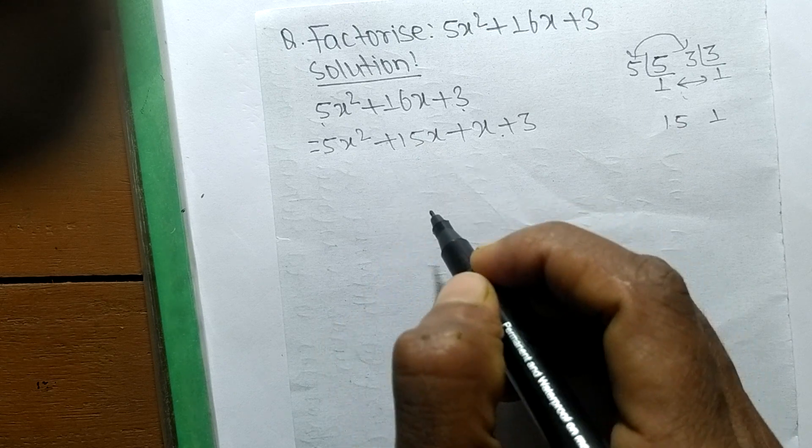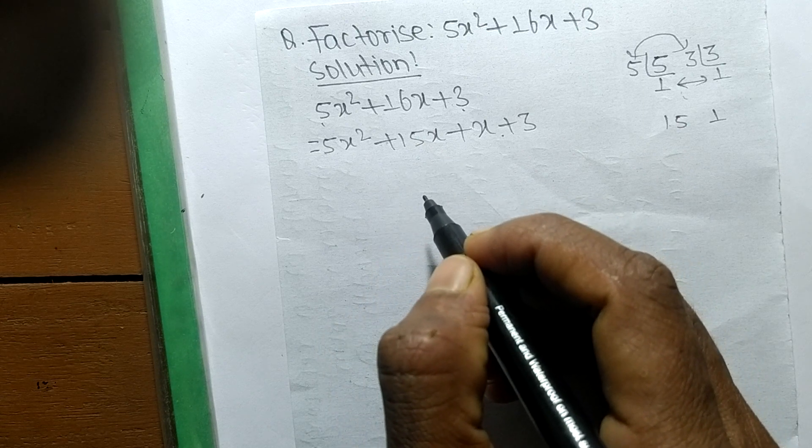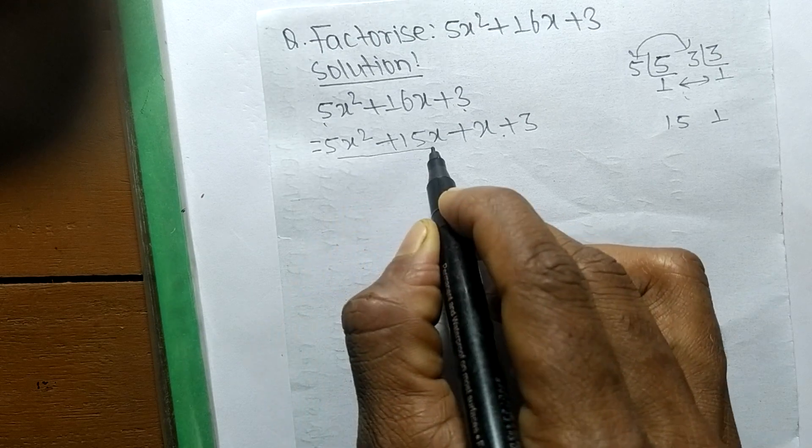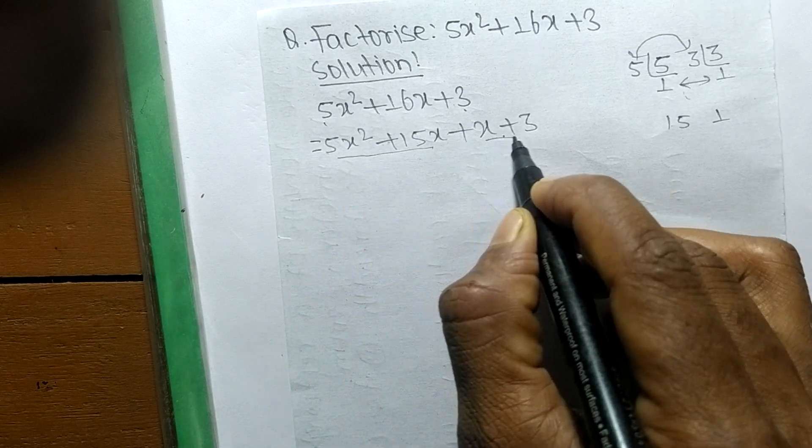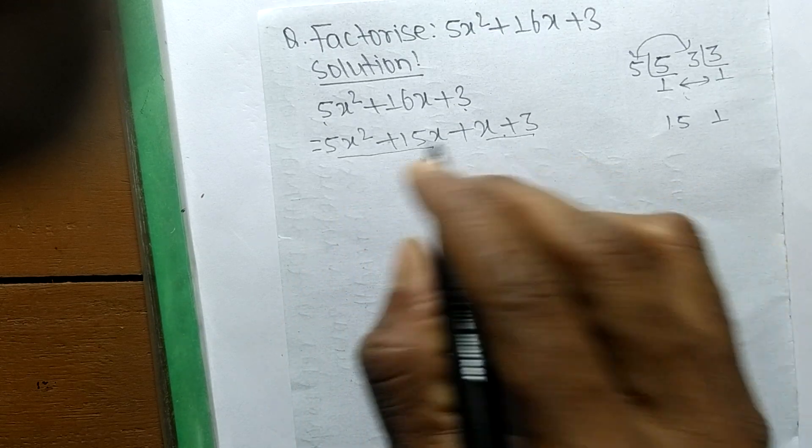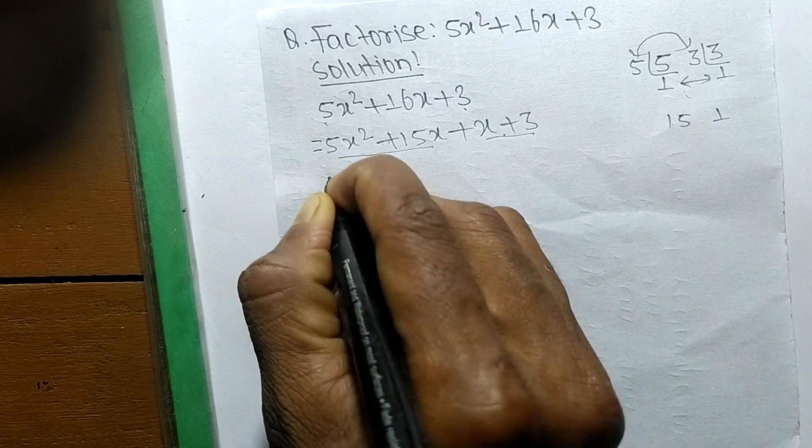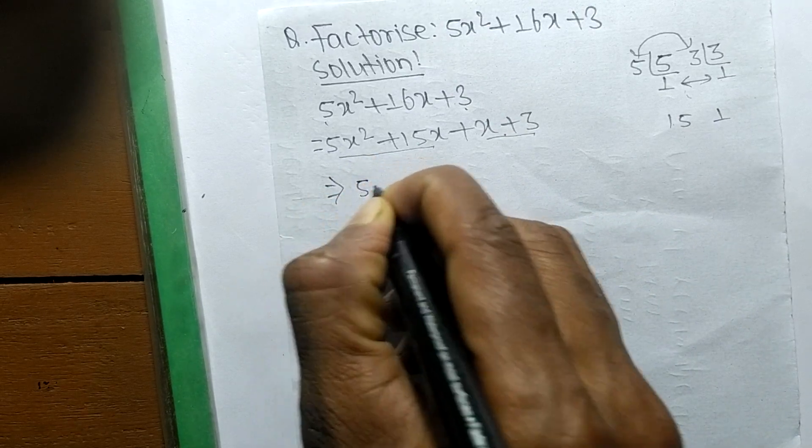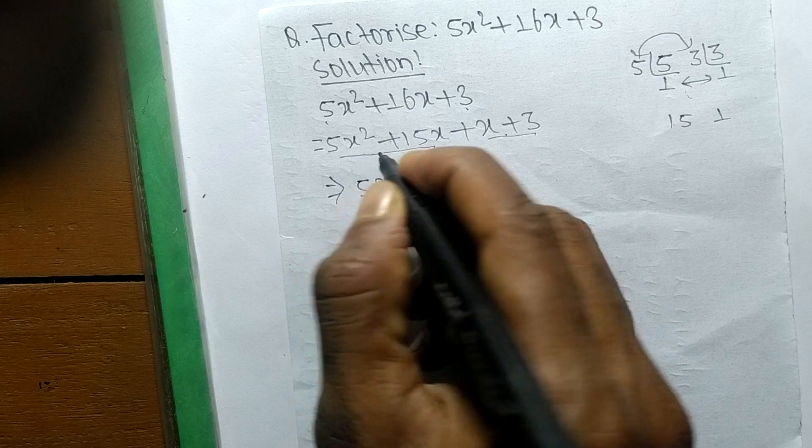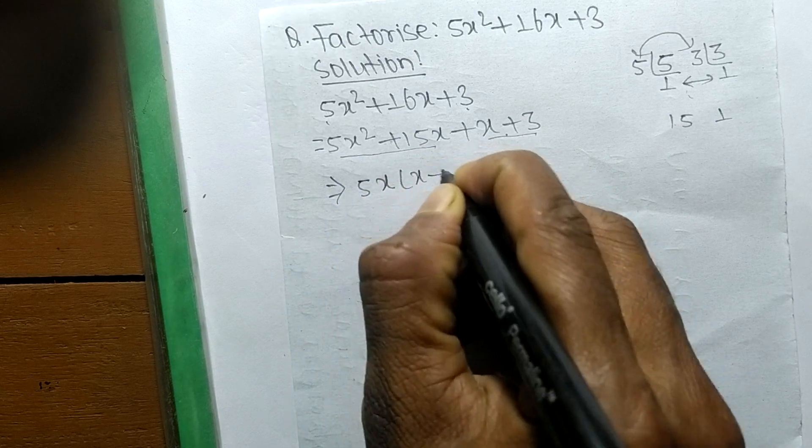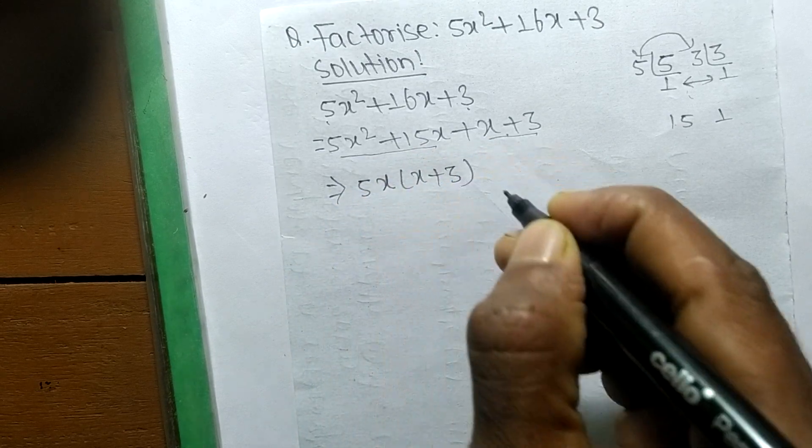Now we have to separate these expressions into two pairs. These both are the first pair, and these both are the second one. In the first pair, the common part here is 5x, so the remaining is x + 3.